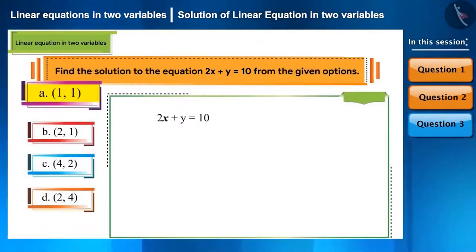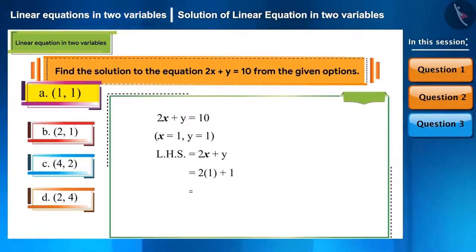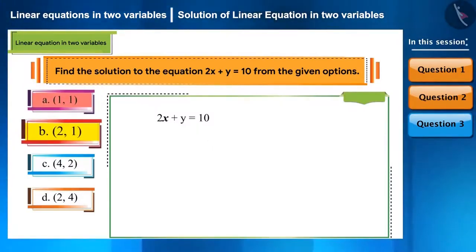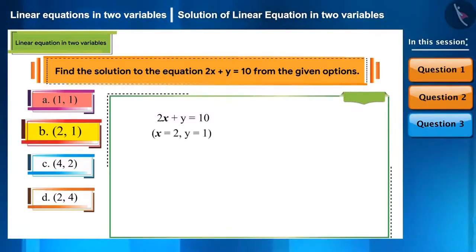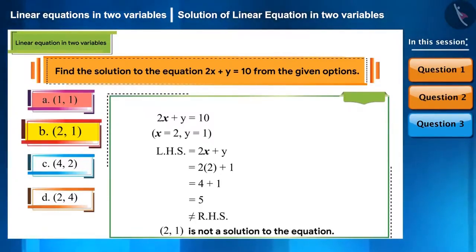Let's see the first option, where the value of both x and y is 1. Substituting x = 1 and y = 1 in the equation gives a value of 3, which is not equal to 10. Hence, (1, 1) is not a solution. For the second option, x is 2 and y is 1. Substituting it in the equation, we get 5. Therefore, this option is also not a solution to the equation.